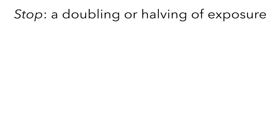And once you know what stops are, you'll find that you can balance your exposures a whole lot better. Stops are how we quantify changes in ISO, shutter speed, and aperture. Simply stated, one stop is a doubling or halving of brightness.